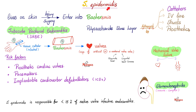Because Staph epidermidis has a slime layer, it is very slimy, and that's why it is paramount to ensure that venous catheters are clean and disinfected. Staph epidermidis does not cause skin infection. It can cause infective endocarditis, mechanical valve failure, and immune complex-mediated glomerulonephritis.